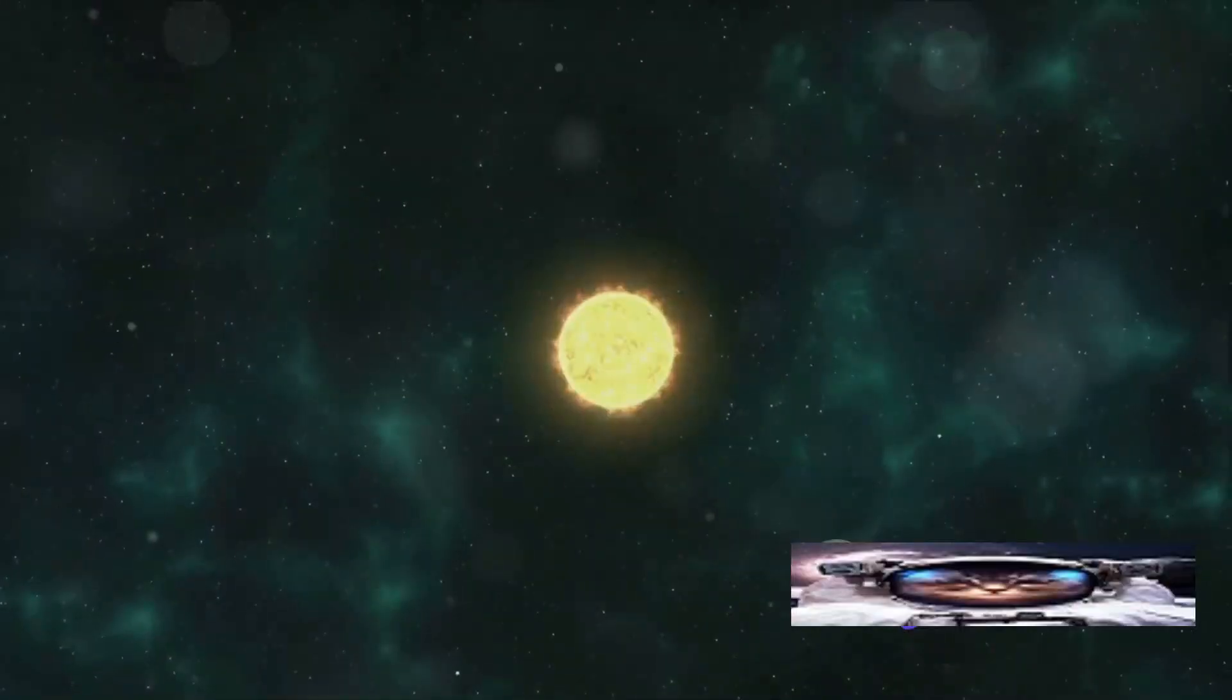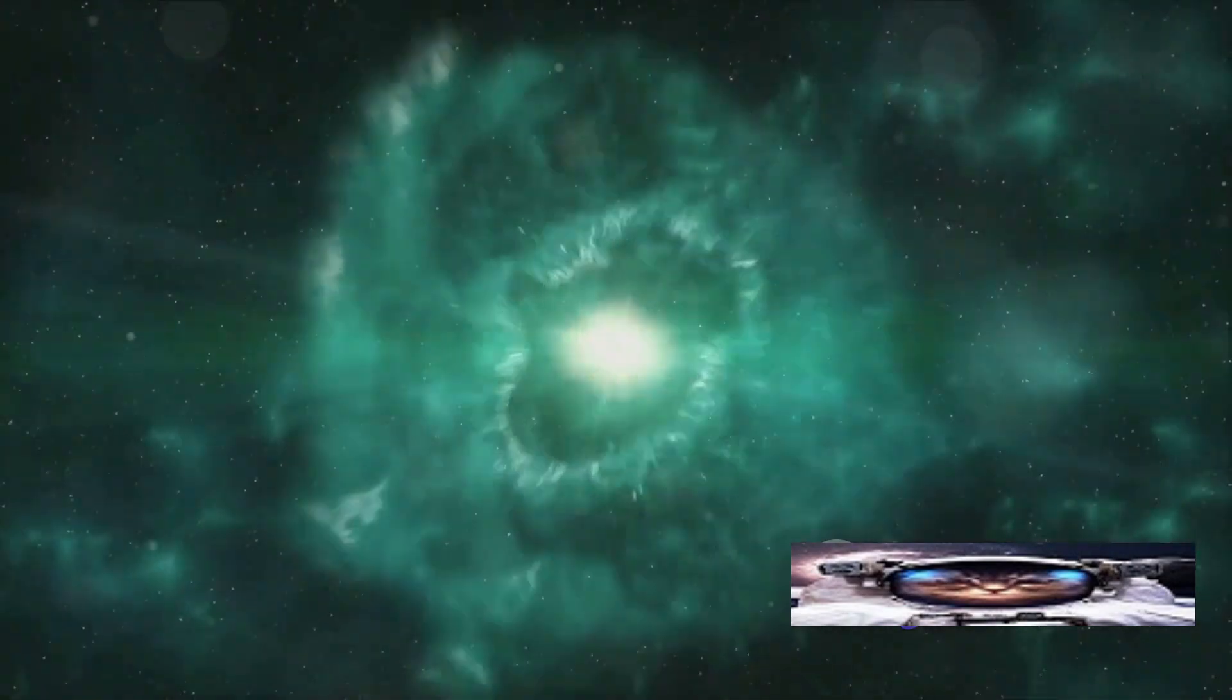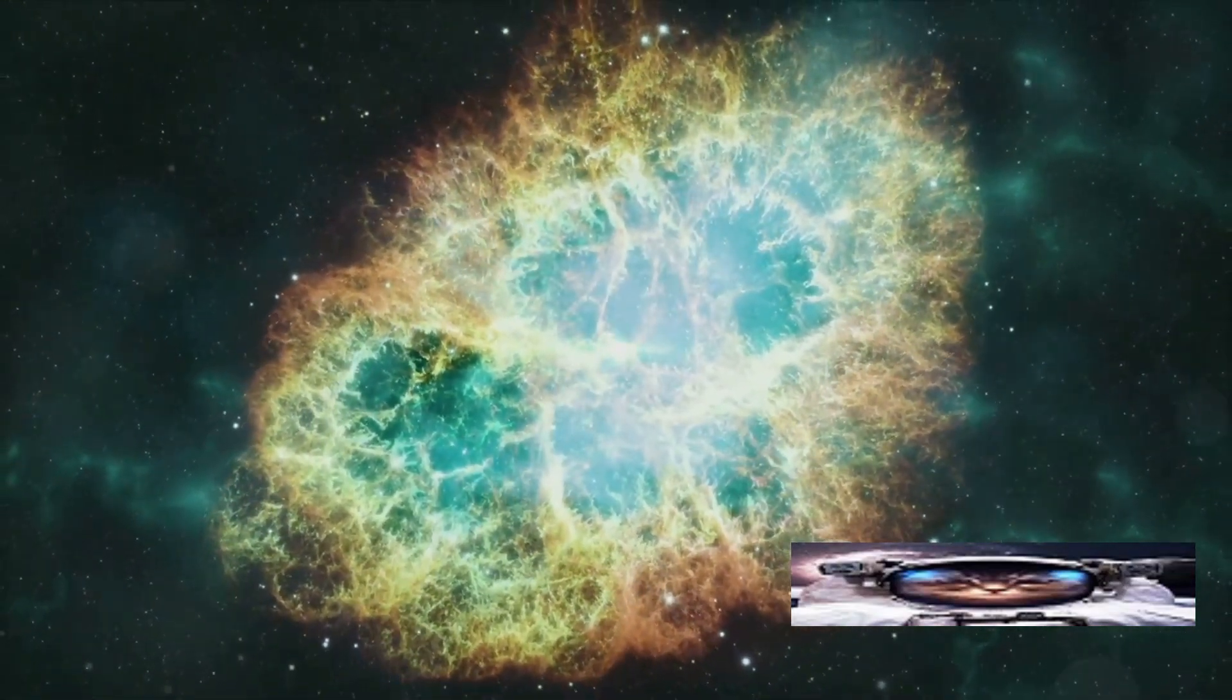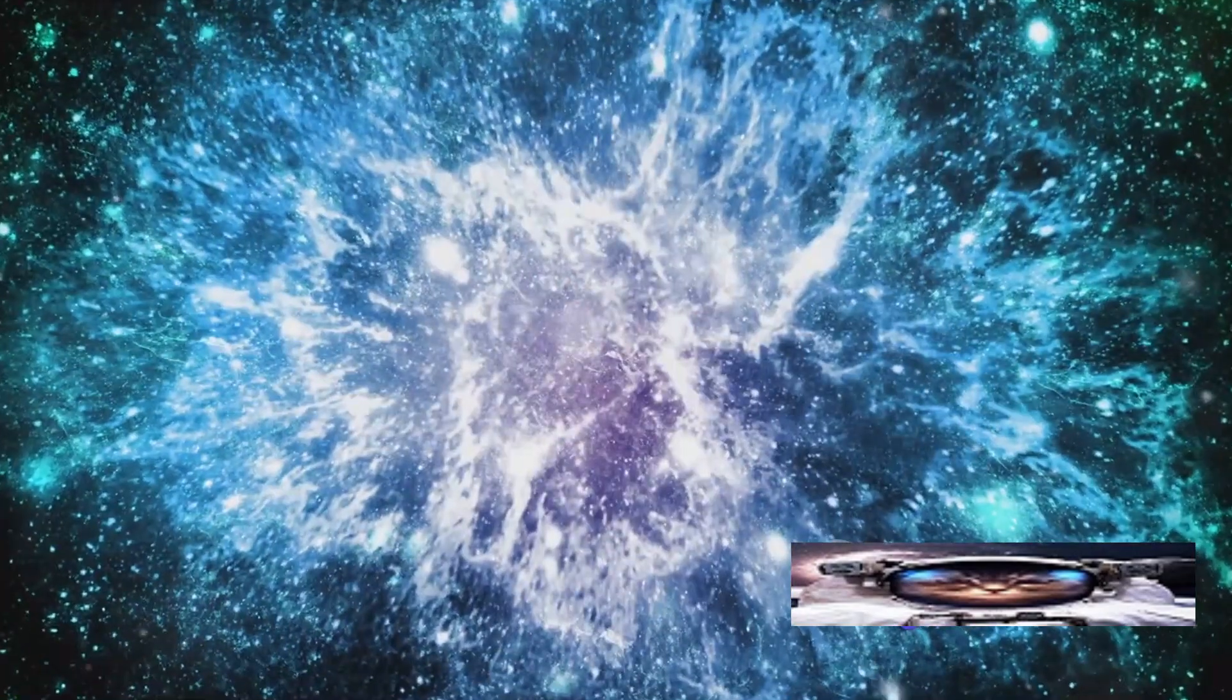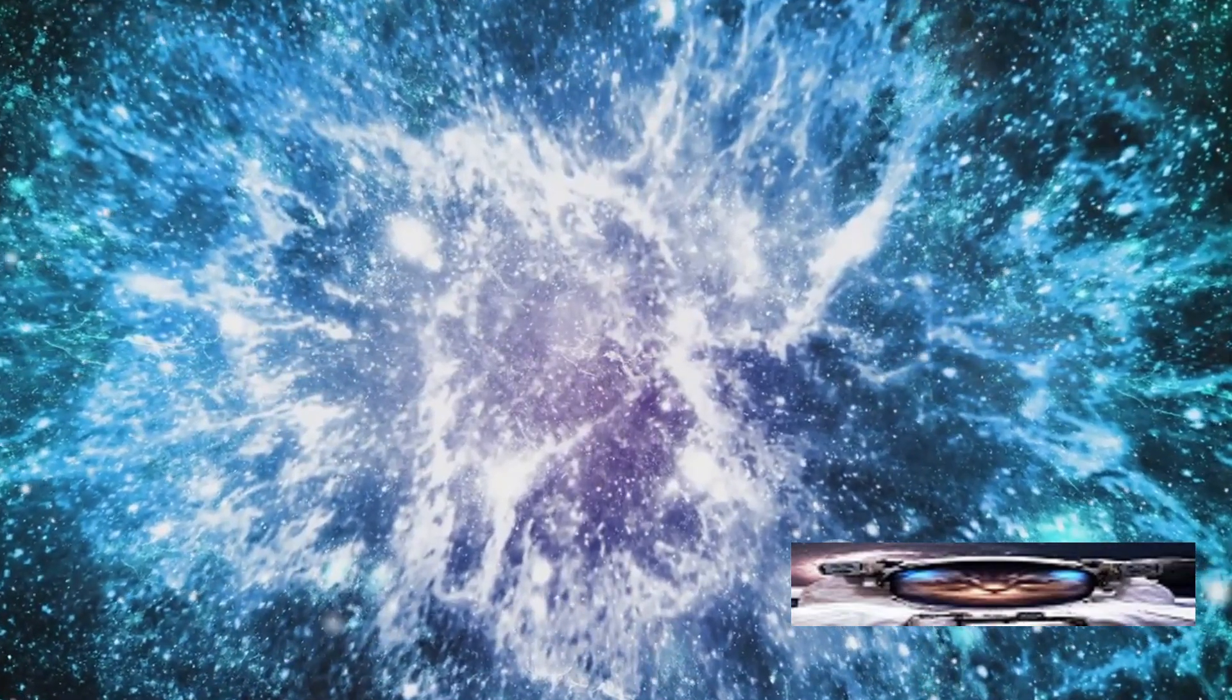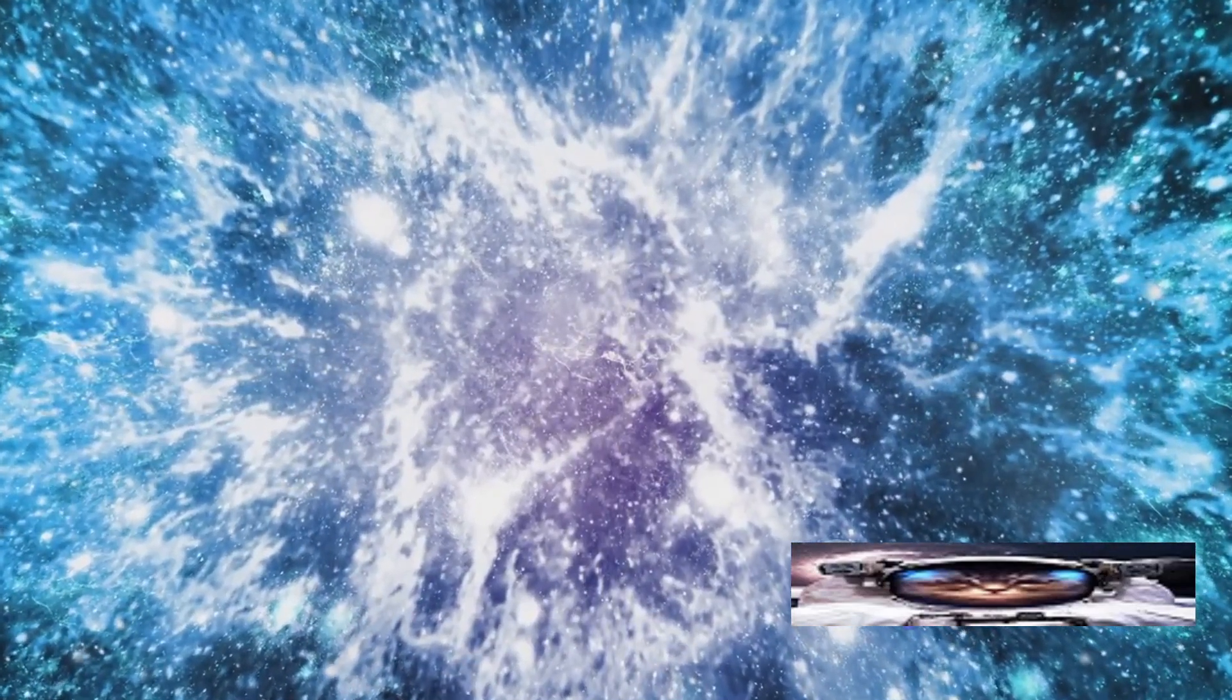Finally, we have the Crab Nebula. Located about 6,500 light-years away, this nebula is the remnant of a supernova explosion that was observed by Chinese astronomers in the year 1054. What makes the Crab Nebula unique is the pulsar at its heart, a rapidly spinning neutron star that emits a beam of radiation with such precision that it rivals the accuracy of atomic clocks here on Earth.